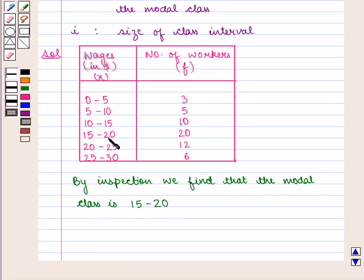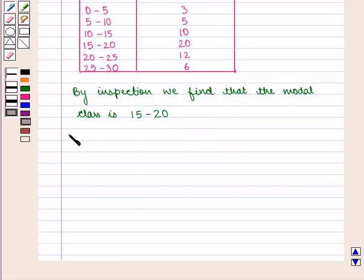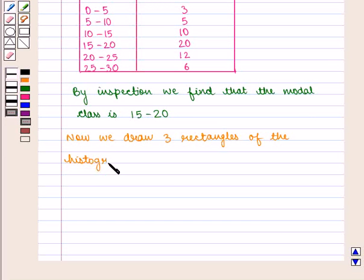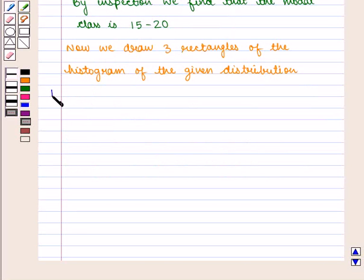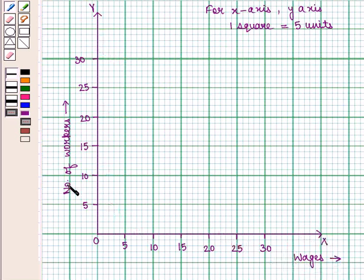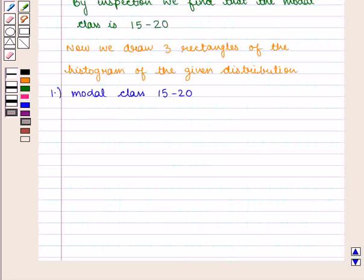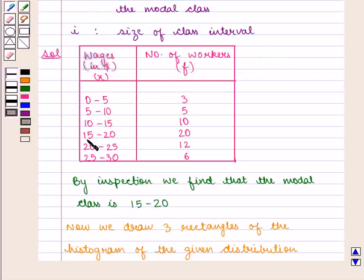Now we draw three rectangles of the histogram of the given distribution. In the graph, wages are along the X-axis and number of workers along the Y-axis. We draw the first rectangle corresponding to the modal class 15 to 20, which has 20 workers.